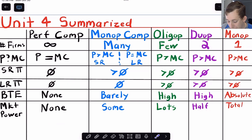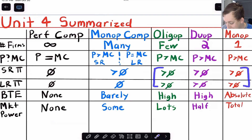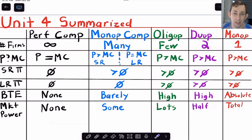The same thing is going to happen in monopolistic competition, except it's going to happen a little slower. You might have some positive profit in the short run, but in the long run your profit is going to be zero. Because we have some market power in oligopoly and monopoly markets, we're going to have positive values of profit. We're going to talk about each of these market structures individually in different videos in Unit 4.